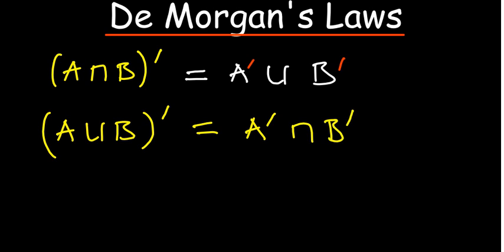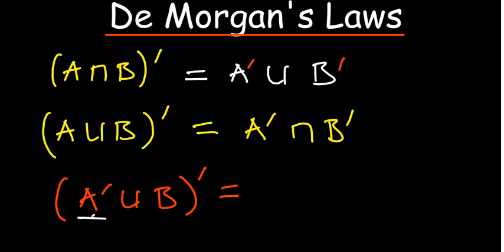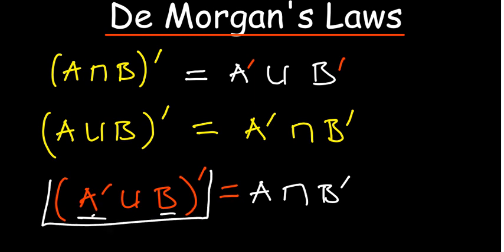These are the two De Morgan's laws that will guide us as we look at set theory. Considering a case where you have A complement union B, and then a complement outside, we expect the same to apply. Where we have A complement, it will become just A; where we have union, it becomes intersection; and B will become its complement. So I'm applying De Morgan's law to simplify this.